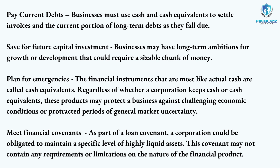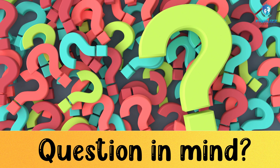Third, cash and cash equivalents can be used to plan for emergencies. These financial instruments, being most similar to actual cash, may shield a company against adverse business conditions or extended periods of general market unpredictability. Fourth, they can be used to meet financial covenants — as part of a loan covenant, a corporation could be obligated to maintain a specific level of highly liquid assets. For instance, a loan can stipulate that a business maintains a specific level of cash or cash equivalents.